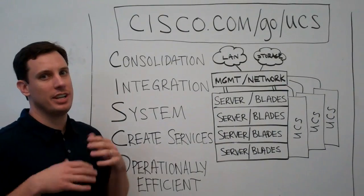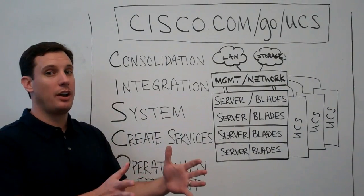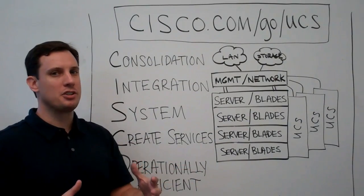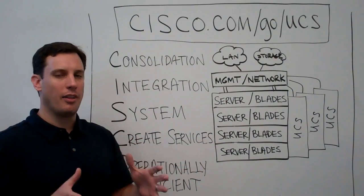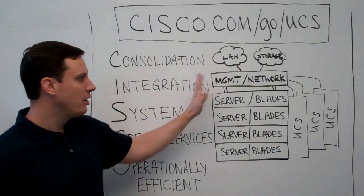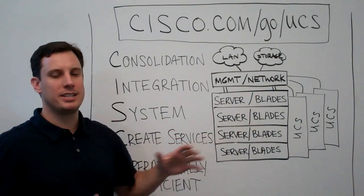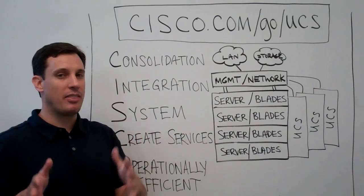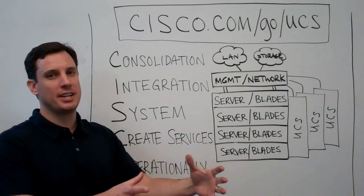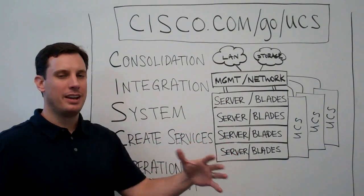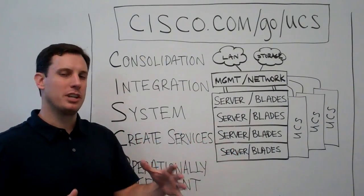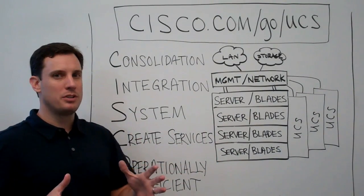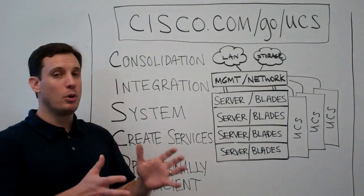And finally, it's operationally efficient. We talked earlier about consolidating, about trying to be environmentally efficient, but operationally it's the most efficient platform on the market. Single point of management for as many racks and as many blades as they could probably deploy today — up to about 320 blades. You start thinking about that number combined with virtualization densities, and you've got a massive footprint that can be managed from a single point, and again, if they really want to, operationally manage through open API.